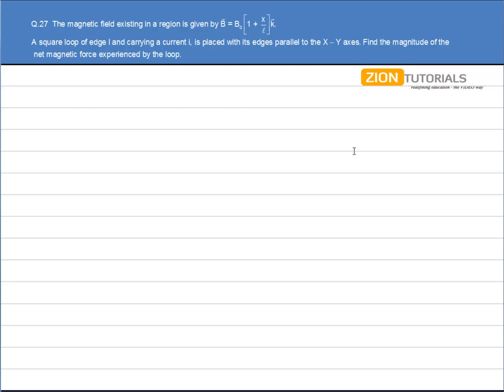A magnetic field exists in the region and it is given by B equals B₀(1 + x/L) in the k direction. A square loop of edge L and carrying a current I is placed with its edges parallel to the XY axis. Find the magnitude of the net magnetic force experienced by the loop.